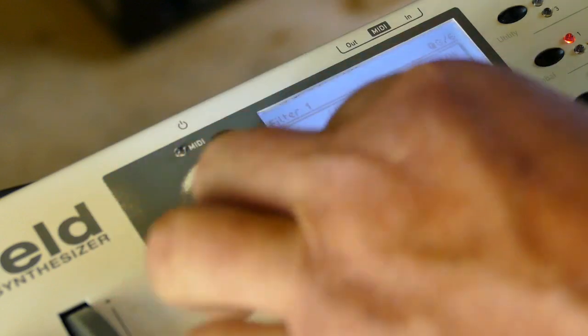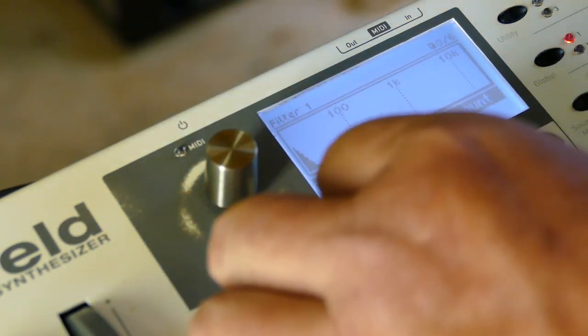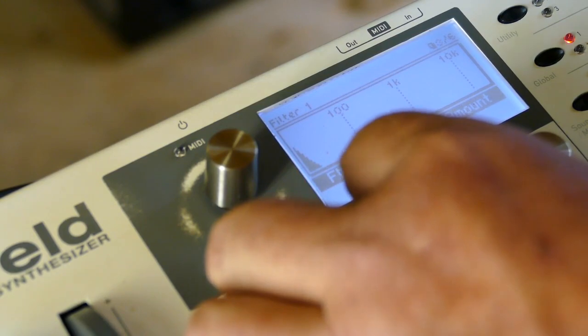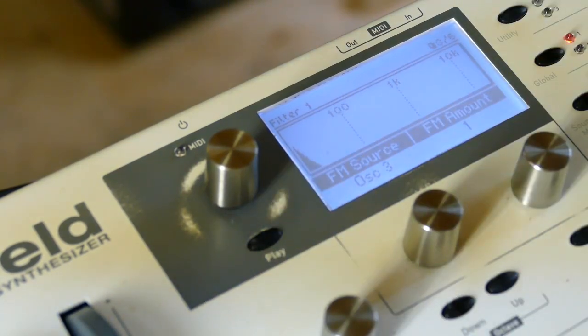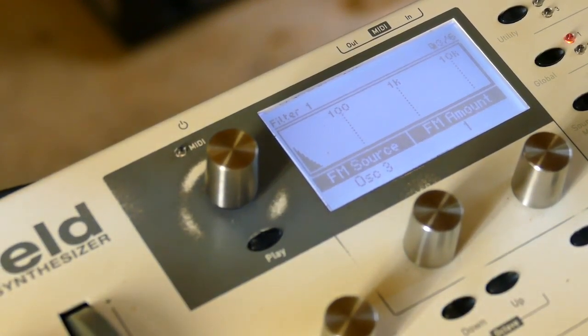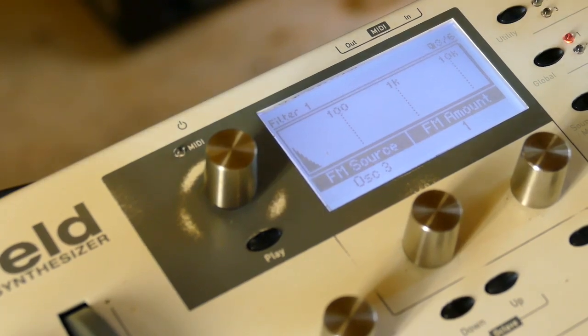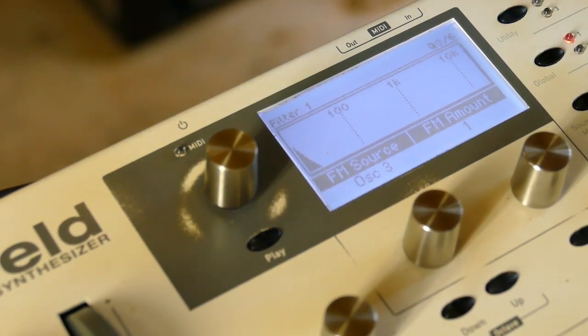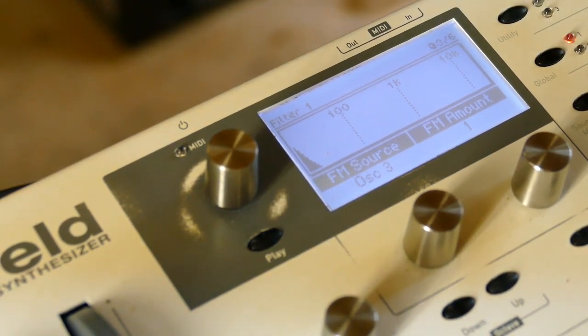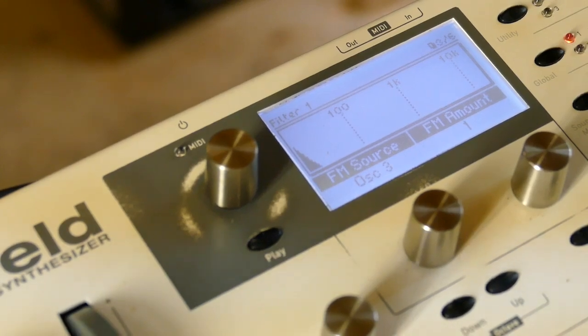Let's throw some FM onto it. Oscillator 3, set to 1. And that is it. That's the end of the tutorial, that's the Monotribe by the way. Take care.